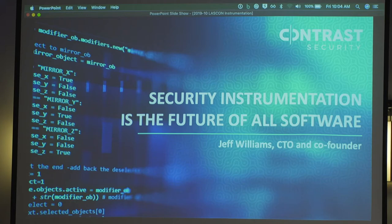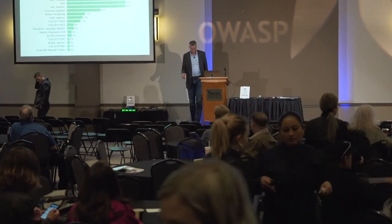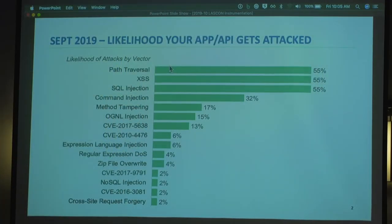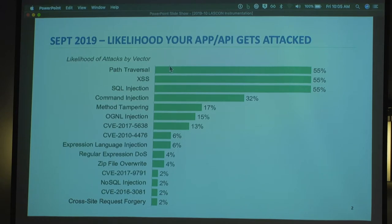I'm going to start today with a little bit of tough love. These are statistics from September on application layer attacks. Your chances of getting attacked with path traversal, SQL injection, or XSS are better than half the number of applications that were not attacked. This is across tens of thousands of applications we monitor. The chance of any one application being attacked is 100% — we saw no applications that weren't attacked in September.